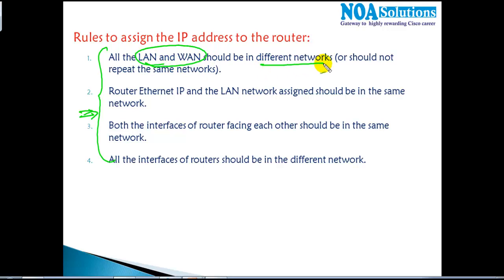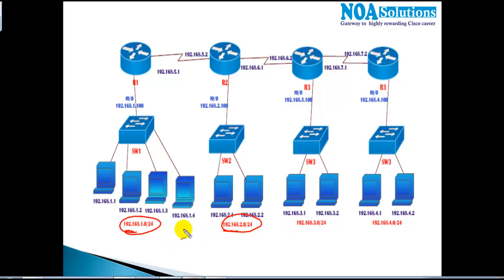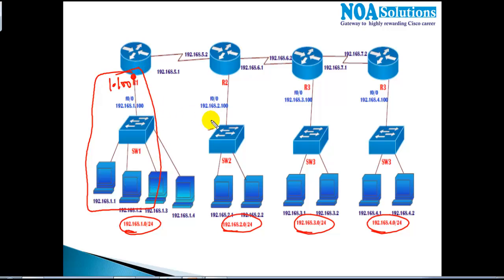To summarize, there are four rules to follow when assigning IP addresses. Rule 1: all LANs and WANs must be in different networks — no repeating the same network. Rule 2: the router Ethernet interface IP must be on the same network as the LAN it connects to. Rule 3: interfaces facing each other between routers must be on the same network. Rule 4: all interfaces on a single router must be in different networks. Follow these rules to ensure proper routing.